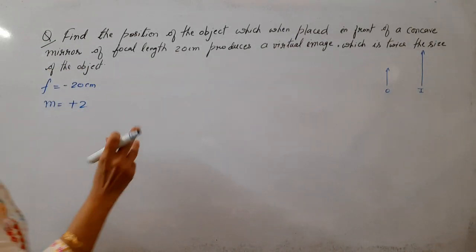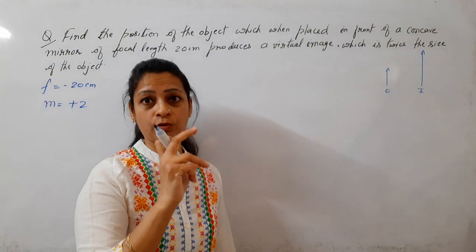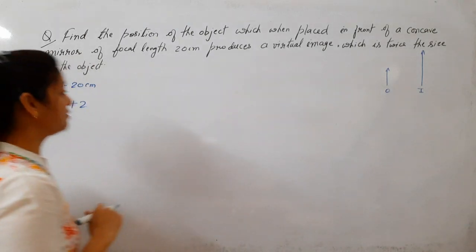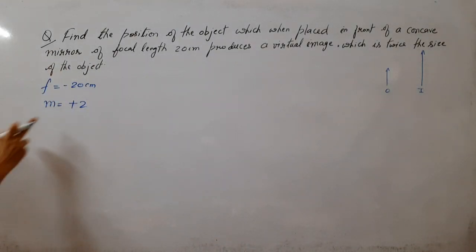Magnification kya hote, ye hi to hote hai. Ratio of size of object to the size of image. Sorry, image, size of image upon size of object. That is magnification. Magnification diya hai, double or virtual hai, isli plus 2.